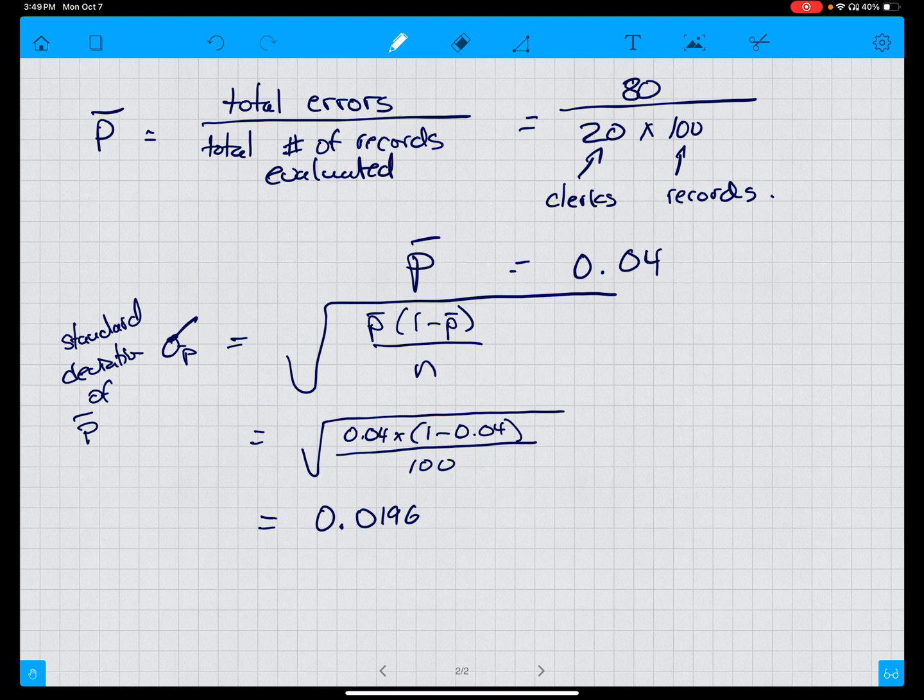This is equal to 0.0196, or if we round to 2 decimal places, equals 0.02. So we now have the basics that we need.